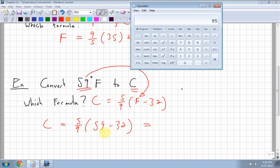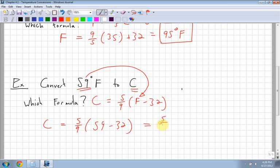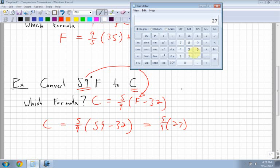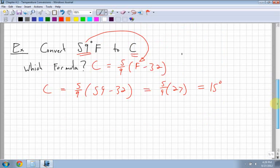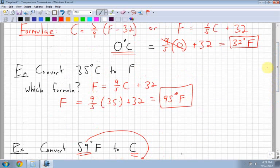So first thing I do is I subtract. I do the inside of the brackets first. So I have 59 minus 32, don't forget order of operations, is equal to 27. So I have five-ninths times 27. Next thing I do is I want to take five over nine, divide them, and then multiply by 27, which is 15 degrees. So I have 15 degrees is my Celsius, and that is how you convert Fahrenheit to Celsius and Celsius to Fahrenheit.